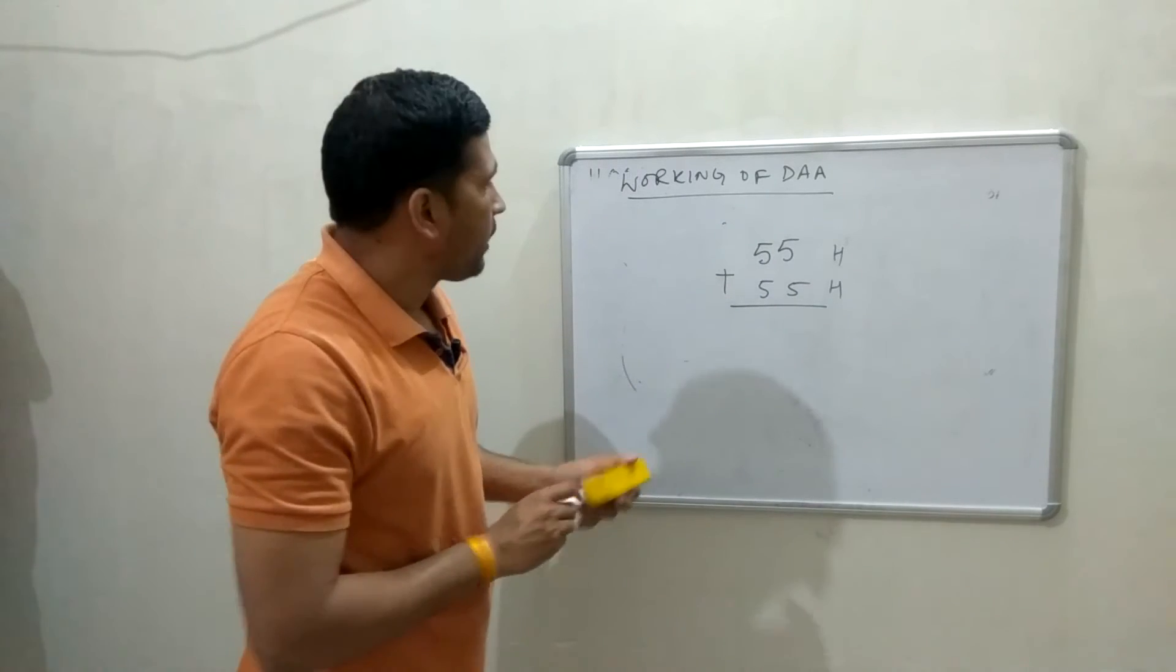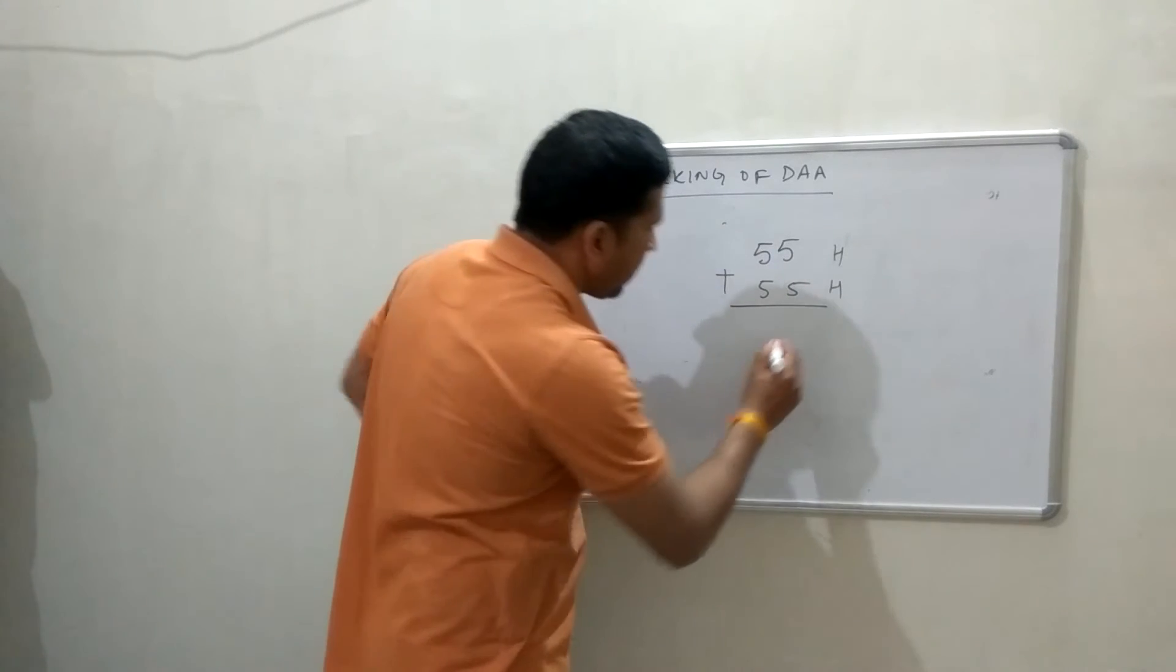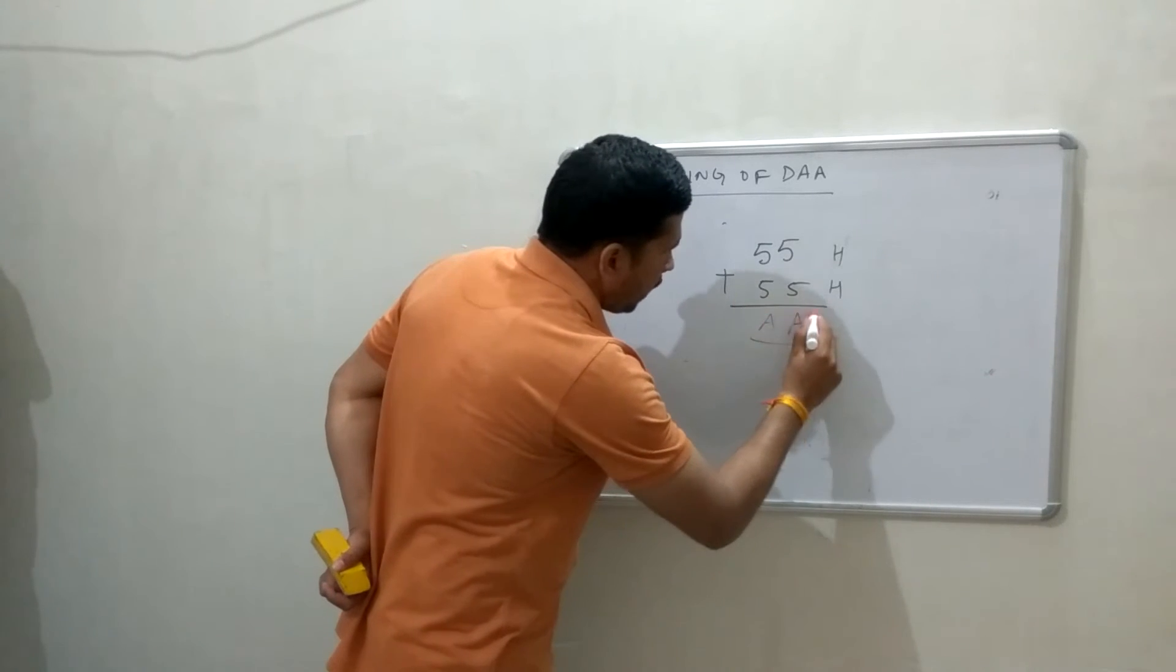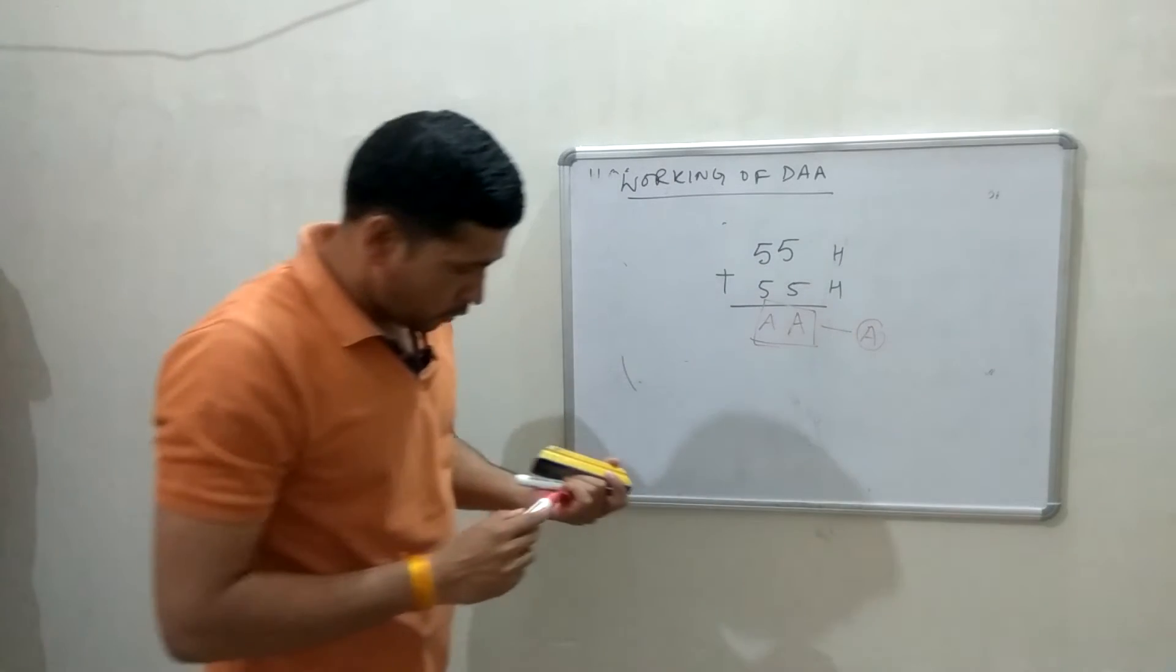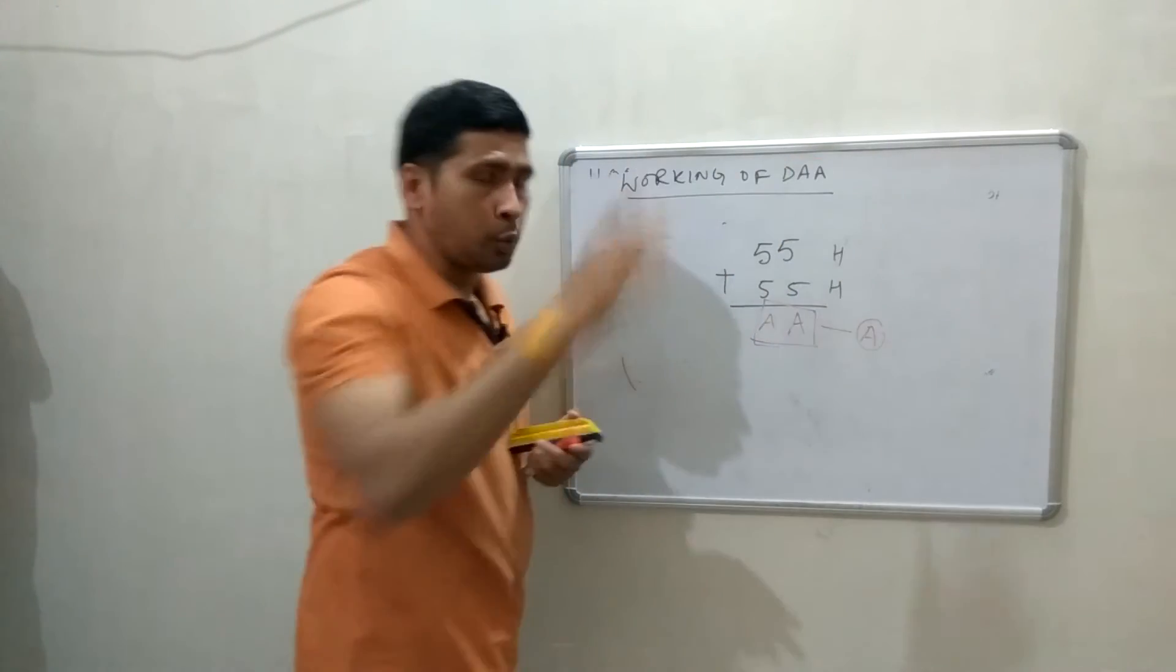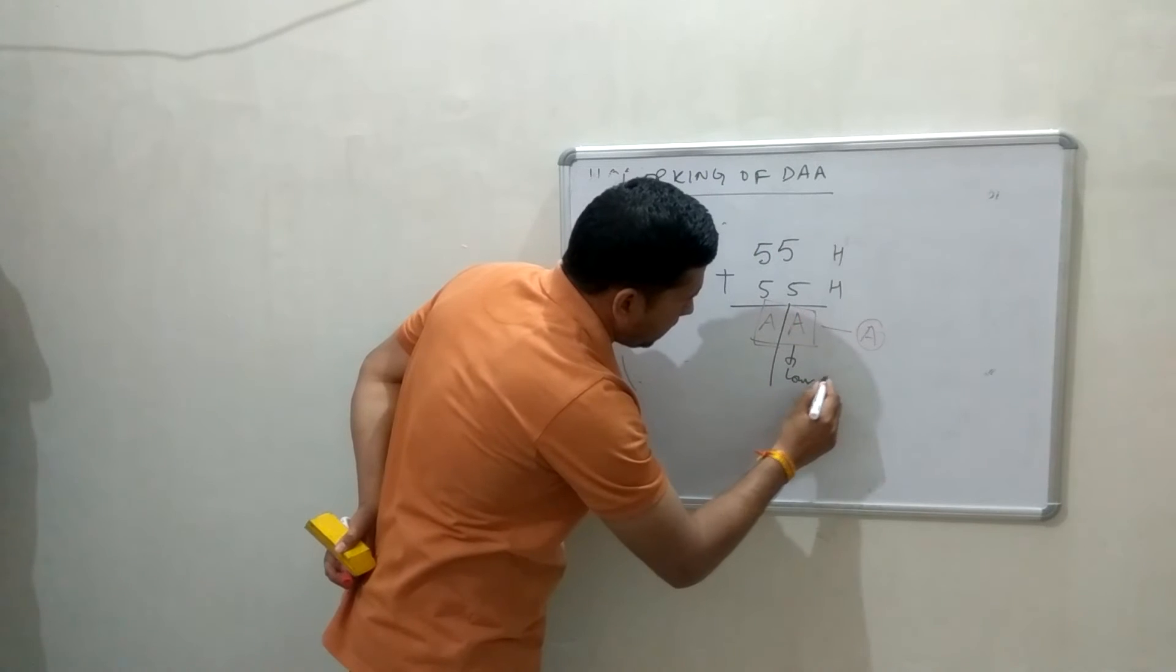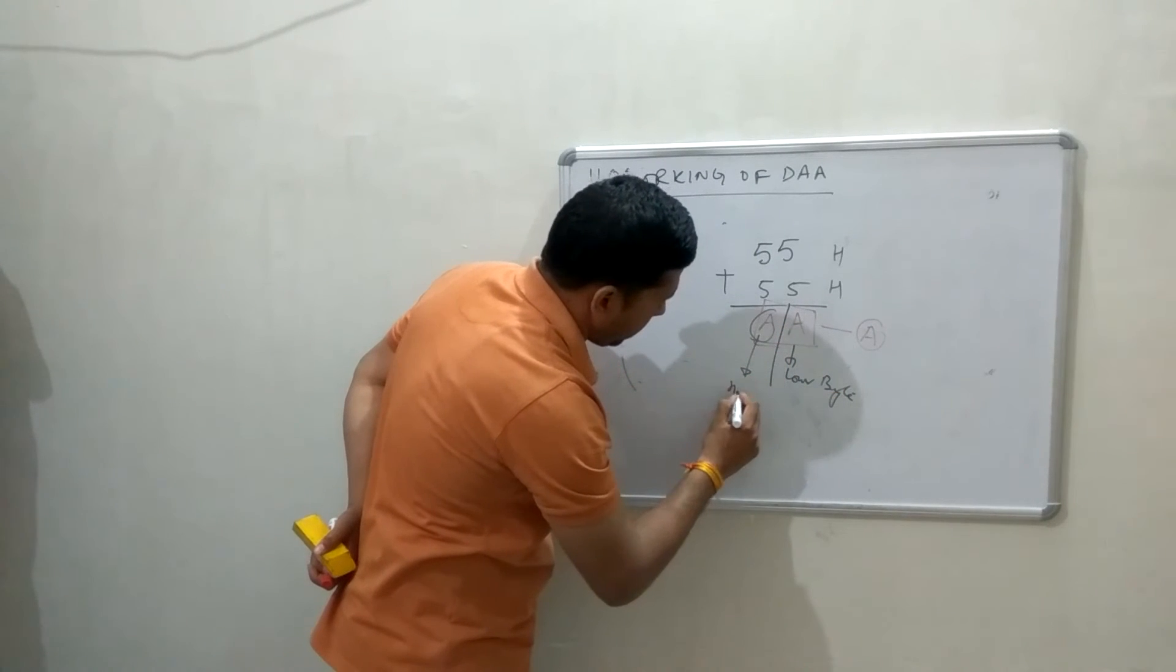My output will be 55+55. That means, in hexadecimal, that will be A. Output, the storing accumulator is double A. Now, what this instruction will do? Now, there are two parts in output. First one is lower byte. Second one is higher byte.